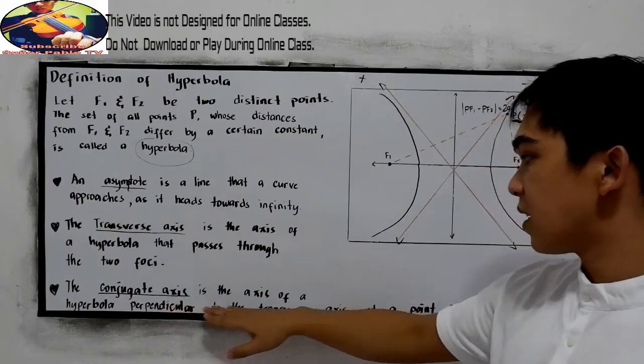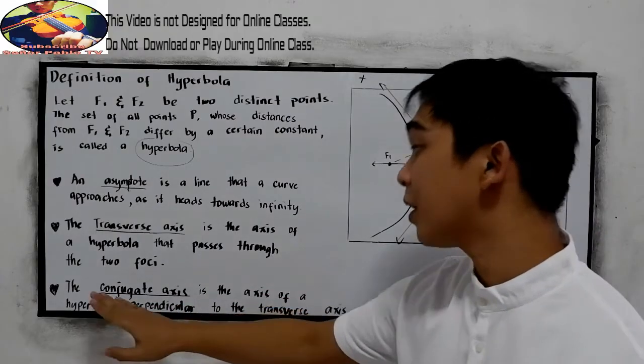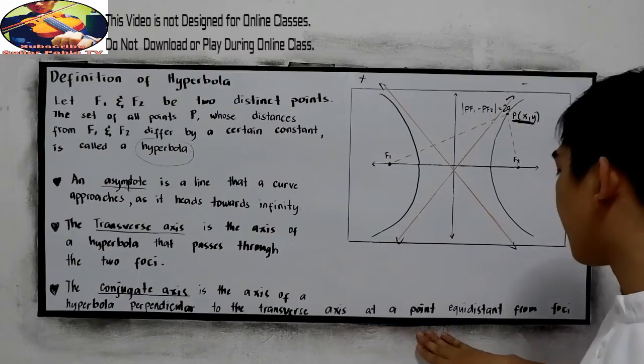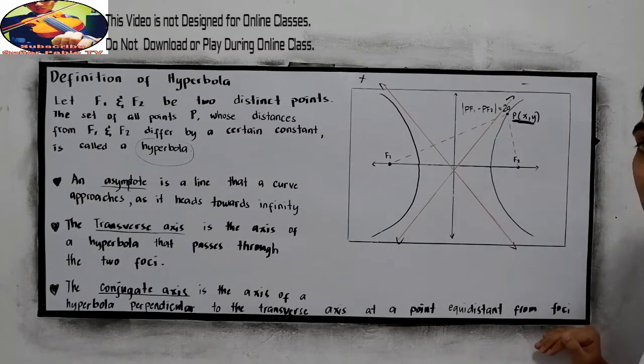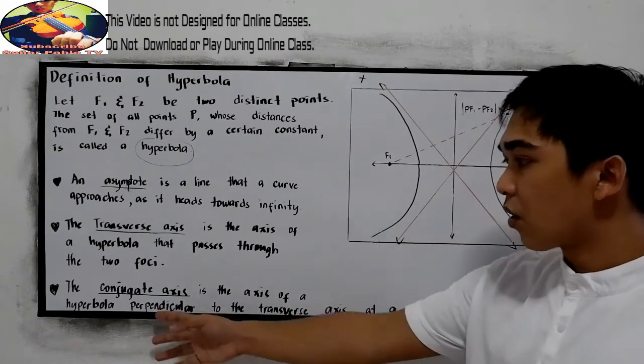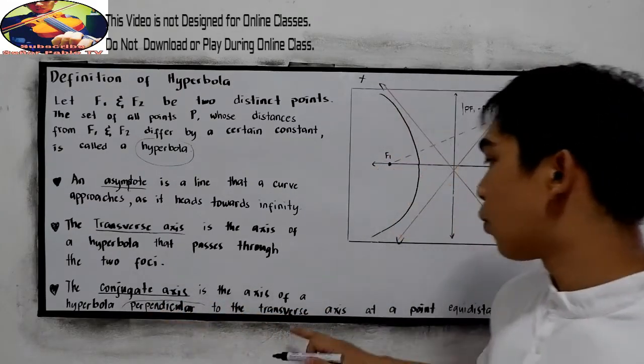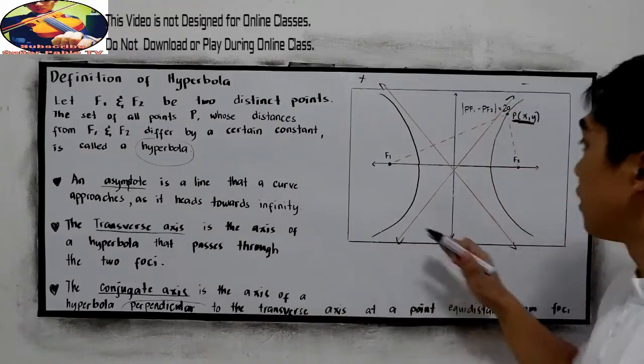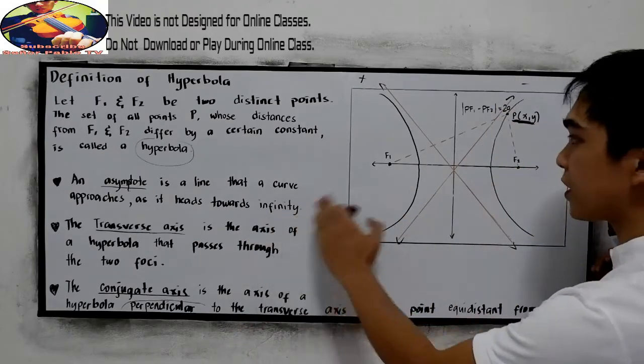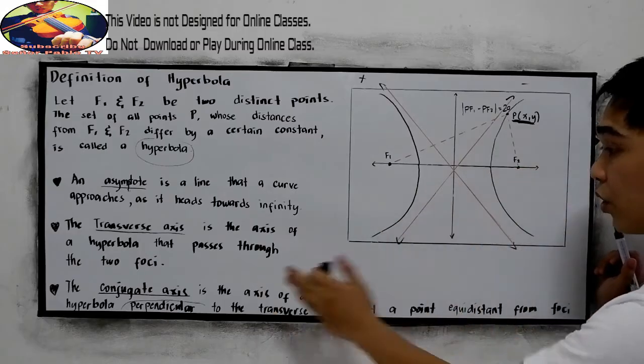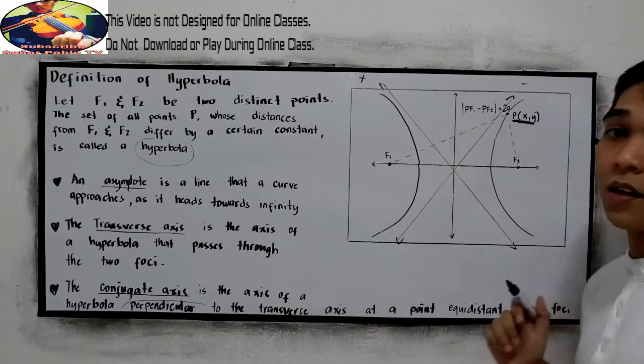The conjugate axis is the axis of a hyperbola perpendicular to the transverse axis at the point equidistant from the foci. Notice that the conjugate axis is perpendicular to our transverse axis. So if our transverse axis is located here, our conjugate axis is vertical. They are perpendicular.